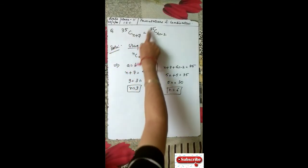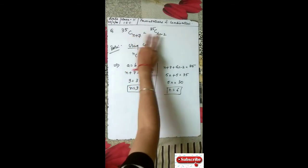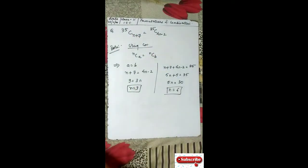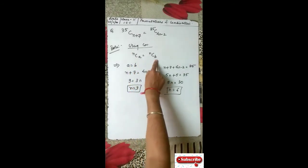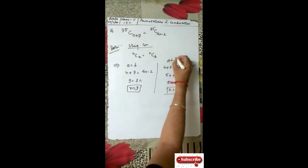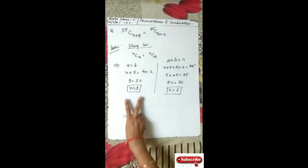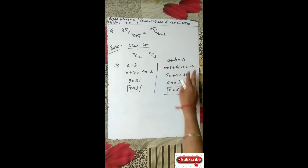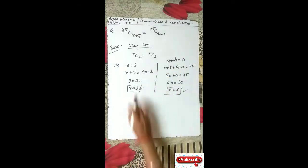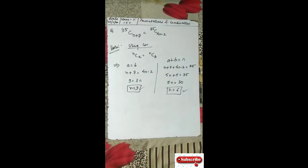Let us understand this question: 35C(N+7) equals 35C(4N-2). Since the outer N values are equal, this matches our corollary NCA equals NCB. Two conditions arise: first, A equals B, so N+7 equals 4N-2, giving N equals 3. Second, A plus B equals N, so (N+7) plus (4N-2) equals 35, giving N equals 6. Both answers are admissible because with both values of N you get the same result. So N equals 3 or 6.